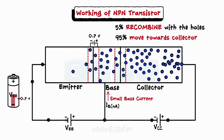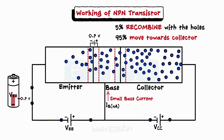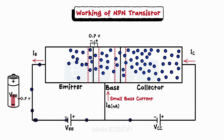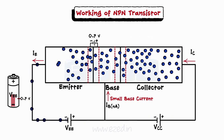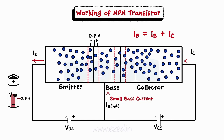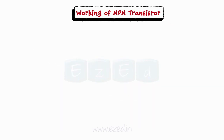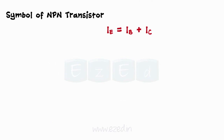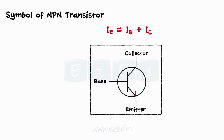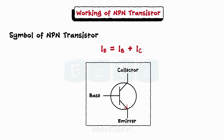The remaining 95% of electrons continue their motion towards the collector terminal, as it is more positively charged than the base. These electrons, along with electrons from the collector region, travel towards the positive terminal of the battery, constituting the collector current from collector to emitter. Thus, the expression for emitter current becomes IE = IB + IC. In the NPN transistor, the flow of current into the emitter terminal is depicted by the arrow heading towards the emitter in the NPN transistor symbol.